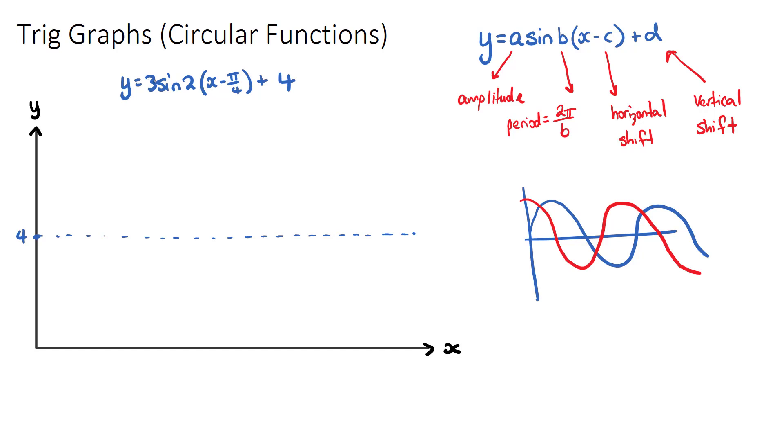Now, if our amplitude is 3, that means that we're going to go up 3 and down 3 from our midpoint, which would be 4. So it's going to go up to 7 and down to 1. And these dotted lines will be our train tracks, like our training wheels when we first learn to ride a bike. I like to do this when we first learn to sketch a circular function.